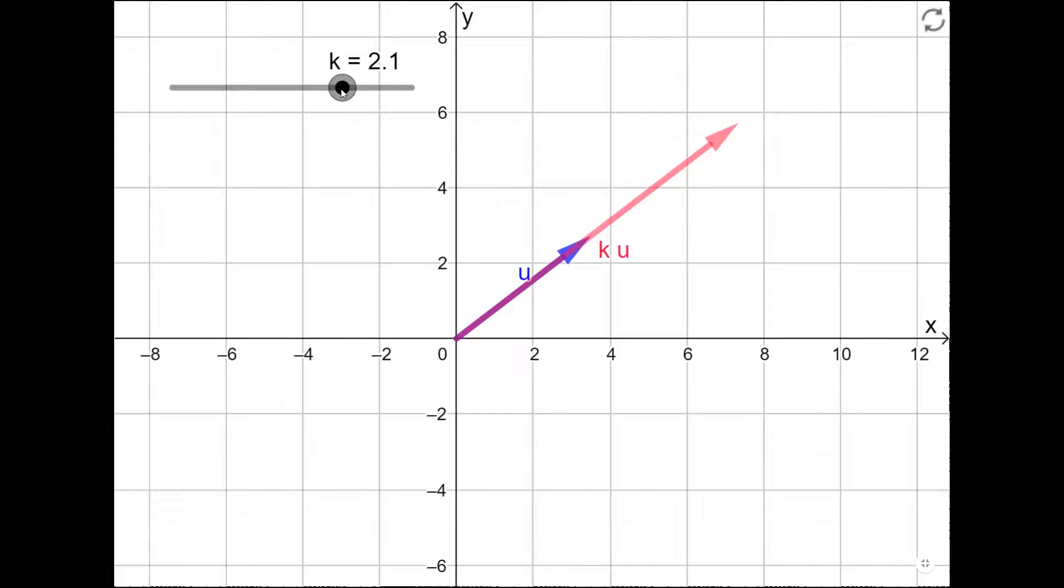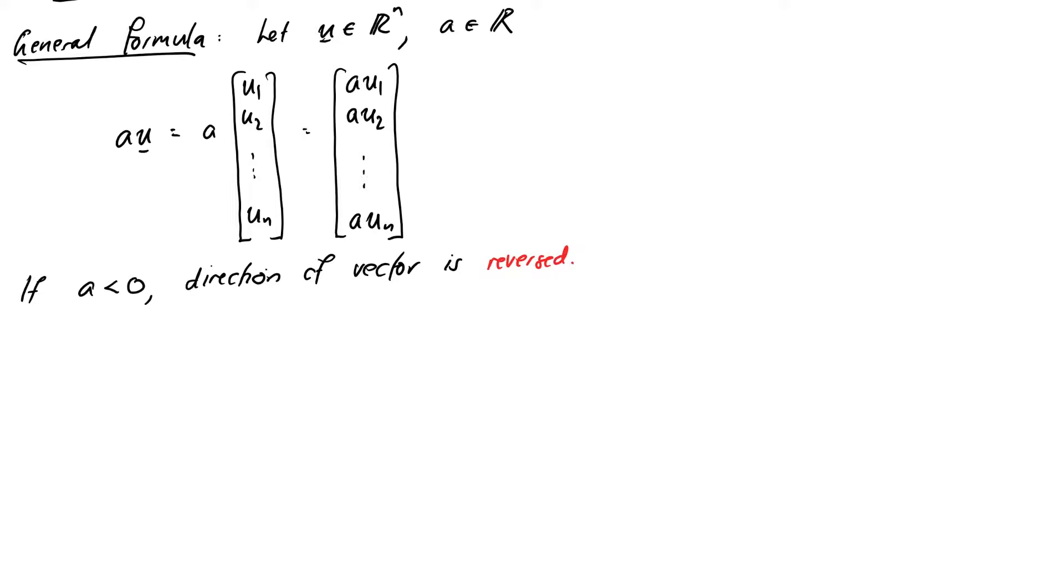Now I've built a little applet in GeoGebra that you can play with to experiment with what happens as the scalar is varied. Notice that negative values of the scalar correspond to a backwards pointing vector. In particular, minus X is the vector X flipped around to point in the opposite direction.